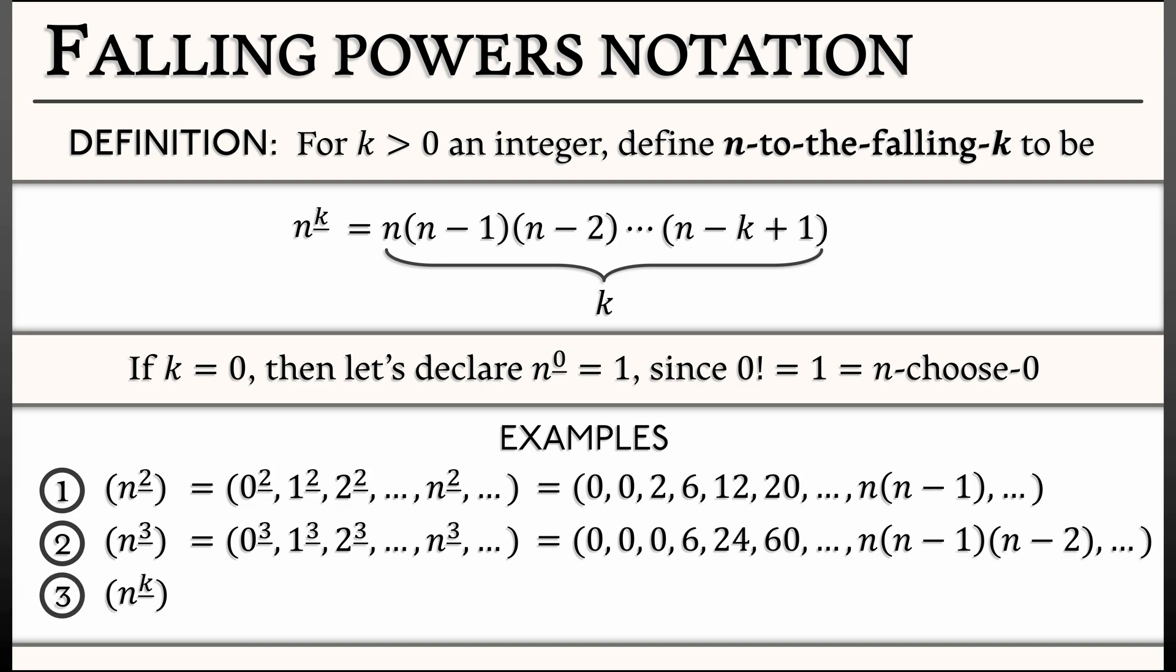In general, n to the falling k is going to be a sequence where the first k terms vanish, and the next term is equal to k factorial, and you might have some fun working that out in generality.